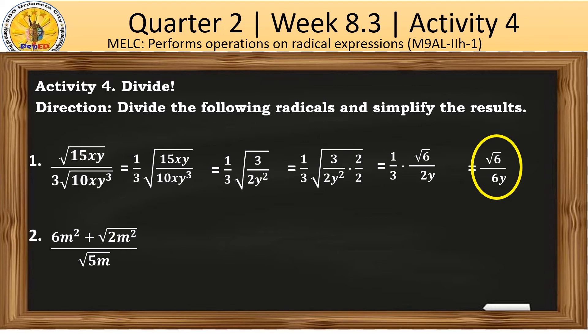For the second problem, the given is 6m squared plus the square root of 2m squared divided by the square root of 5m. What I will do is, I will go ahead and rationalize the denominator. I will multiply the fraction by the square root of 5m over the square root of 5m.